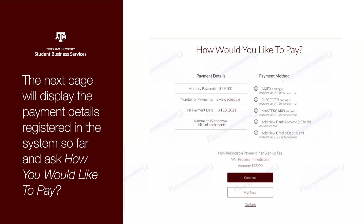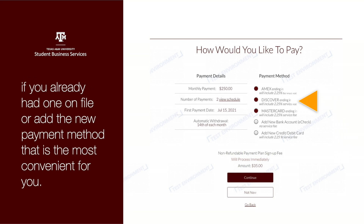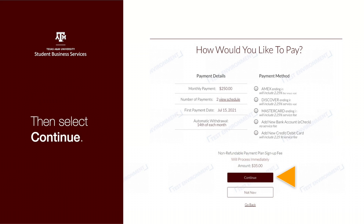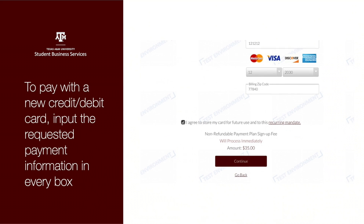The next page will display the payment details registered in the system so far and ask how you would like to pay. To choose a method of payment, under Payment Method, select either an existing payment if you already have one on file, or add a new payment method that is most convenient for you. Then select Continue.